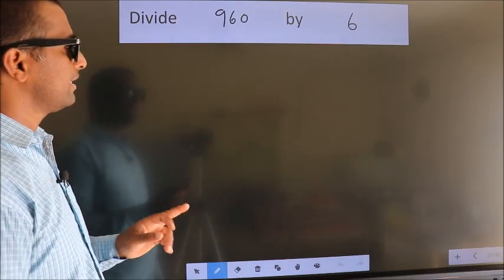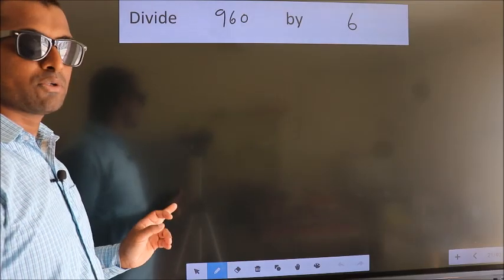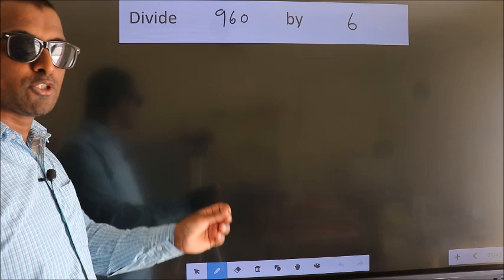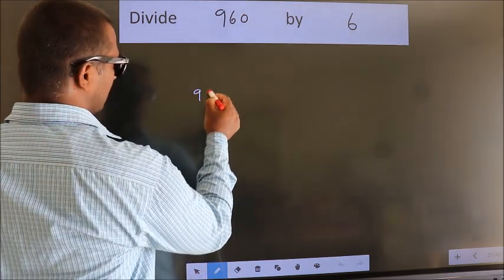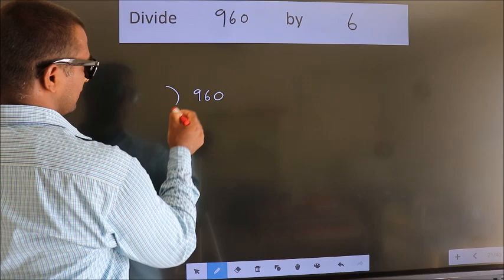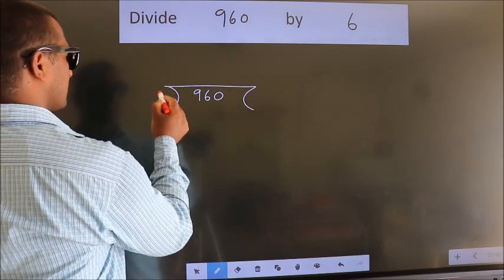Divide 960 by 6. To do this division, we should frame it in this way. 960 here, 6 here.